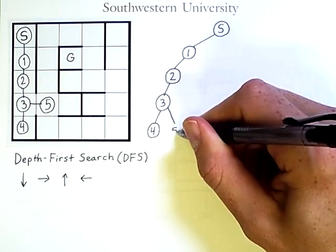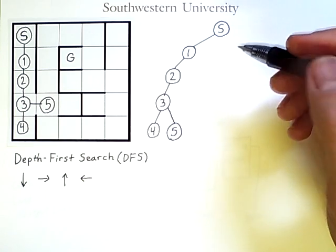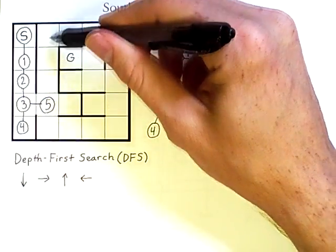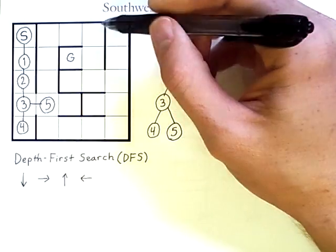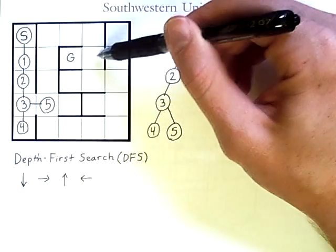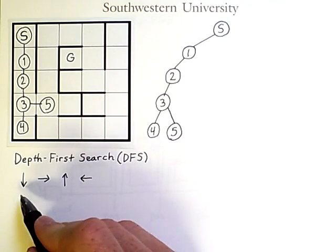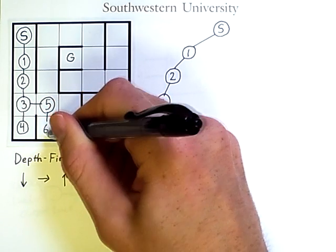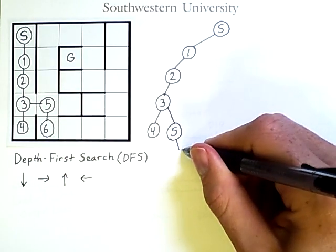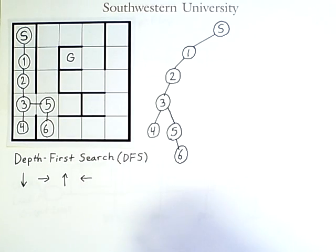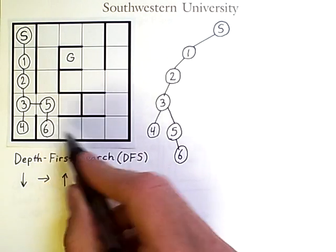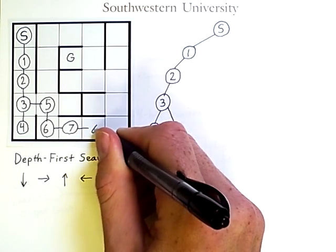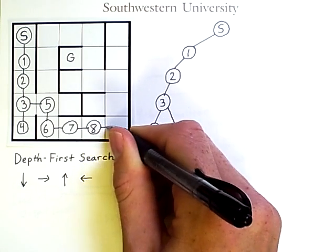At node 5 we see another weakness of depth-first search. As humans we know the upward route quickly reaches the goal — in fact, it's the quickest path. But our search order considers going down first, so we do that instead. From node 5, we go down to node 6. From 6 we can't go down but can go right, reaching node 7. The same happens at node 7, leading to node 8, and then we go from 8 to node 9.